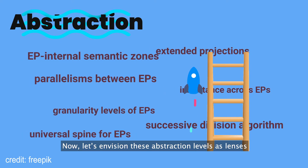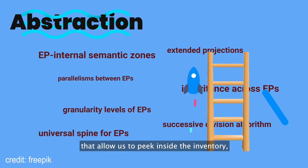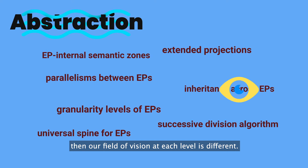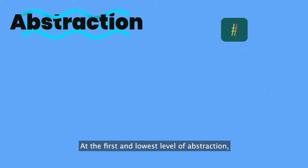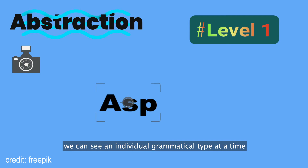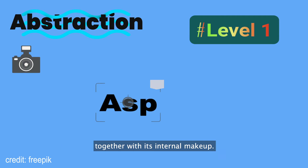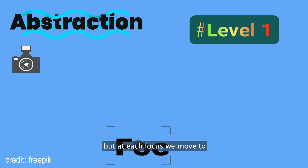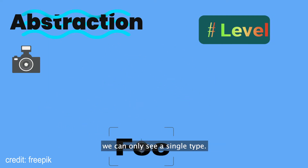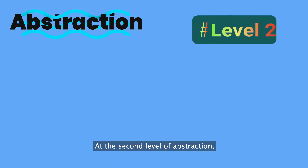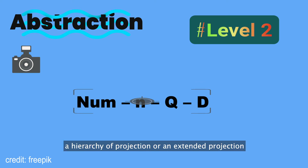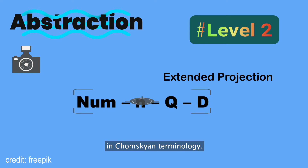Let's envision these abstraction levels as lenses that allow us to peek inside the inventory — our field of vision at each level is different. At the first and lowest level of abstraction, we can see an individual grammatical type at a time together with its internal makeup. At the second level of abstraction, we can see a particular ordered set of grammatical types at a time. Such an ordered set is called a hierarchy of projection or an extended projection in Chomskyan terminology, and all grammatical types within such an ordered set belong to the same major part of speech.